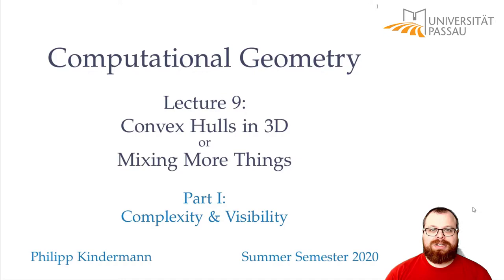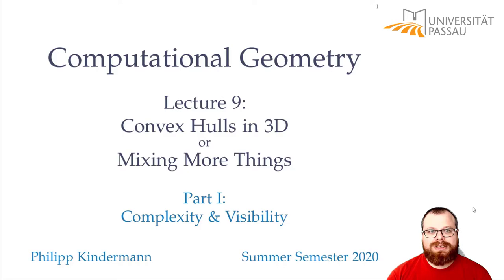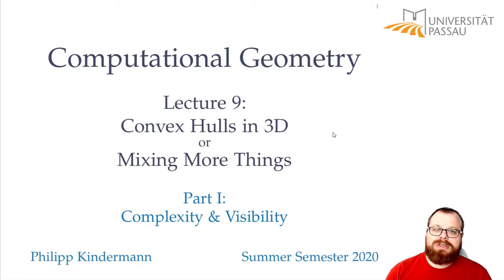Welcome to the 9th lecture on computational geometry. Today we will revisit the topic from our very first lecture, which was the convex hull. In the first lecture we found algorithms to compute the convex hull of a point set in two dimensions, with different approaches and different running times. Today we want to figure out how to generalize it to 3D, which also generalizes to an arbitrary higher dimension.